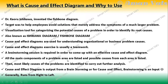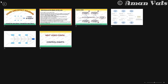All the main components of the problem area are listed, and possible causes from each area are listed. Then the most likely causes of problems are identified to carry out further analysis. Cause and effect brainstorming is the input, and the cause and effect diagram is the output. Generally, the diagram runs from right to left.